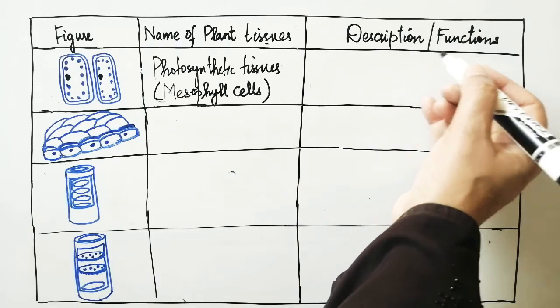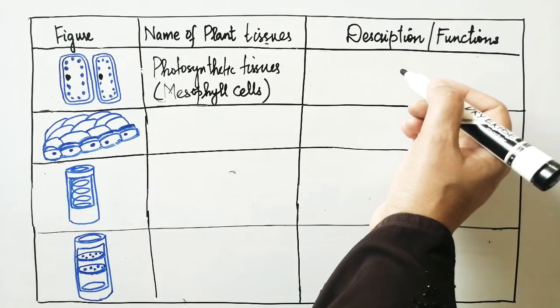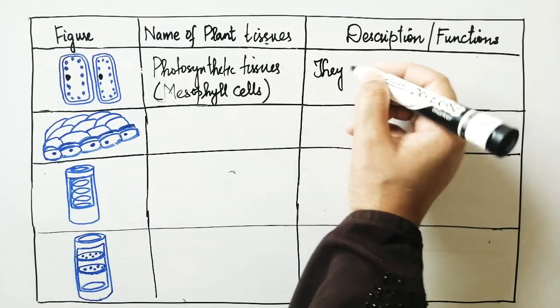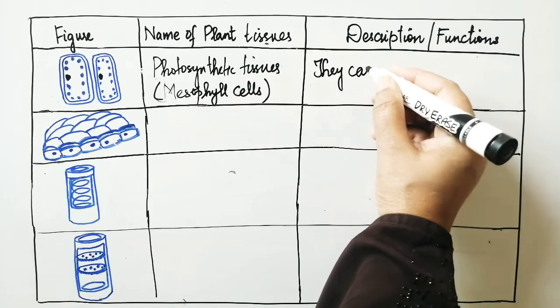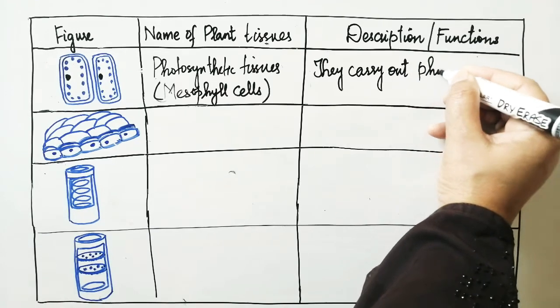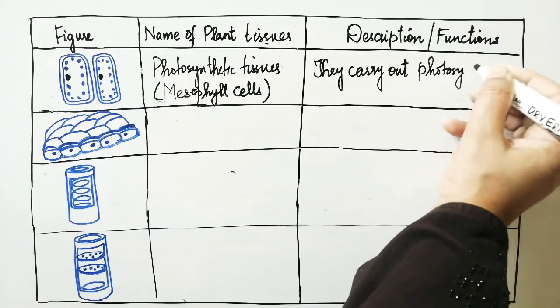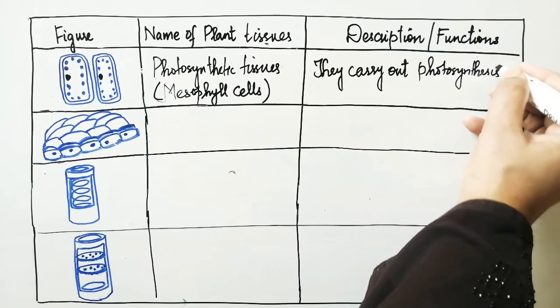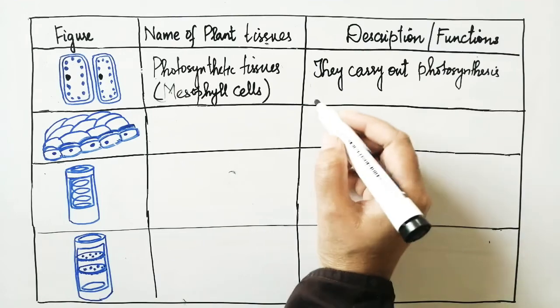What is the job, what is the description or function of the photosynthetic tissue? They carry out or perform—carry out means perform—they carry out photosynthetic process or photosynthesis as they contain chloroplasts.